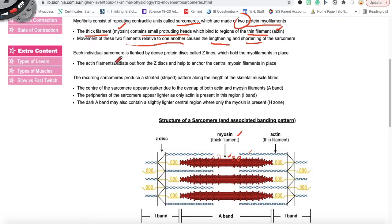All right, in addition each sarcomere is flanked, that means on the sides, by these dense protein discs called Z lines. So these black lines here in the form of Z are these proteins called Z discs and they're there to help anchor that central myosin filament.